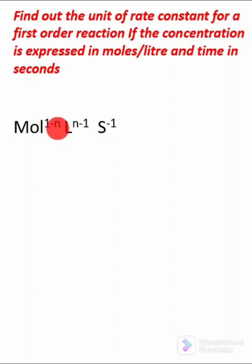Here, this n represents the order of the reaction. In this problem, it is asked to find out the unit for the rate constant of a first-order reaction. So in the place of n, you should substitute 1.